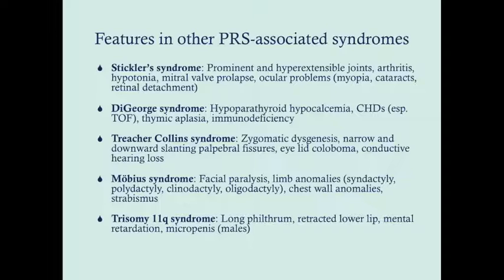DeGeorge syndrome, as you might remember, involves hypoparathyroidism and hypocalcemia. These patients can have congenital heart defects, especially tetralogy. There's usually thymic aplasia — get a chest X-ray and look for that. They can also have immunodeficiency since they don't have a thymus.